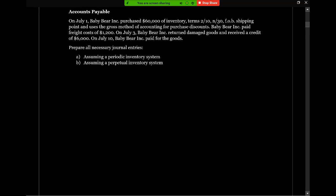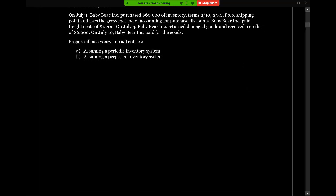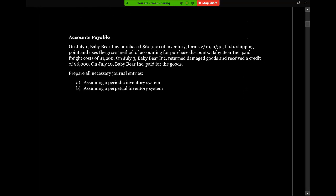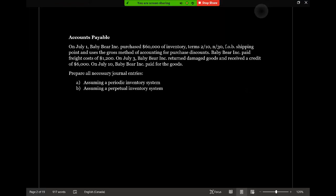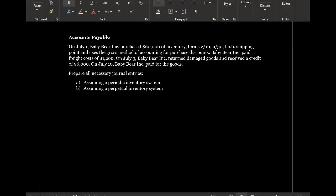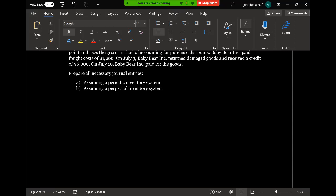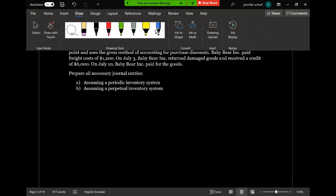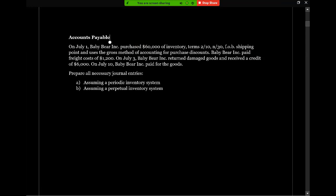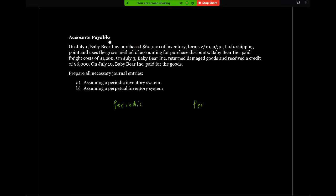How are we going to record these journal entries using the two different accounting systems? Let's make it easy on ourselves and list out the different journal entries according to each of the two options. Here we're going to have periodic, and here we're going to have perpetual.